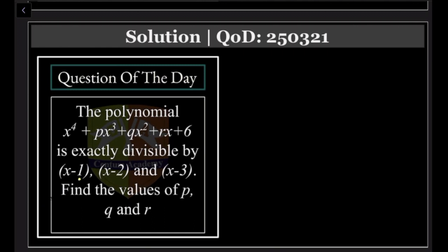So if you put 1, you get 1 + P + Q + R + 6 = 0. So star number 1: P + Q + R = -7. Next line, if you put x equal to 2, then you get...